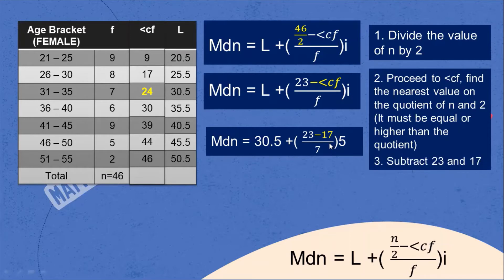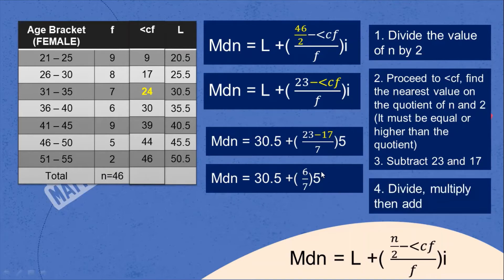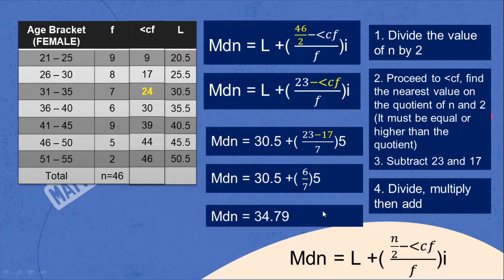Subtract 23 − 17 = 6. Then: 6 ÷ 7 × 5 + 30.5. The value for the median is 34.79. The middlemost score of the distribution is 34.79 for the female respondents. That is how we get the value for the median.